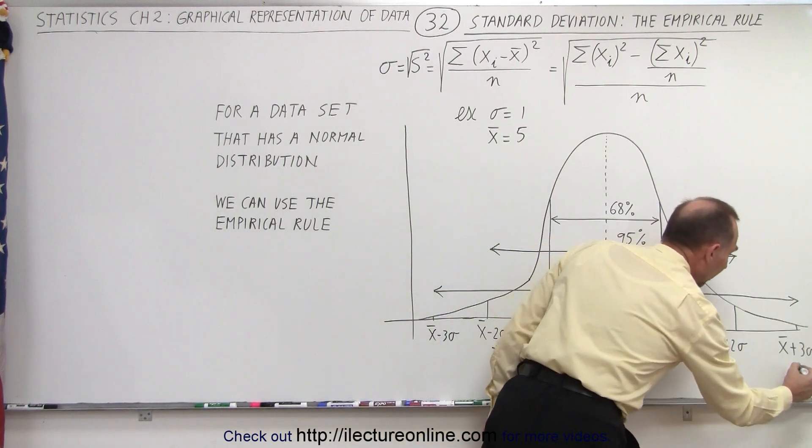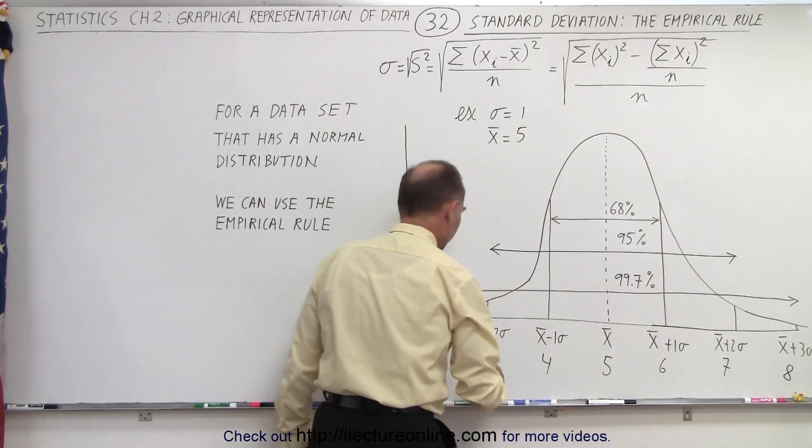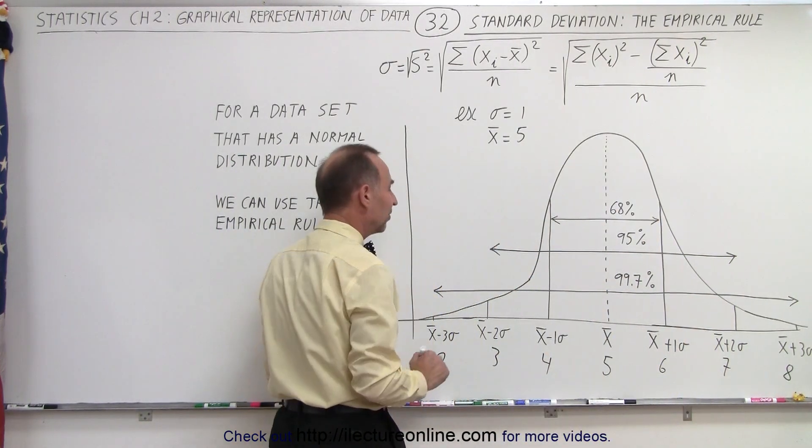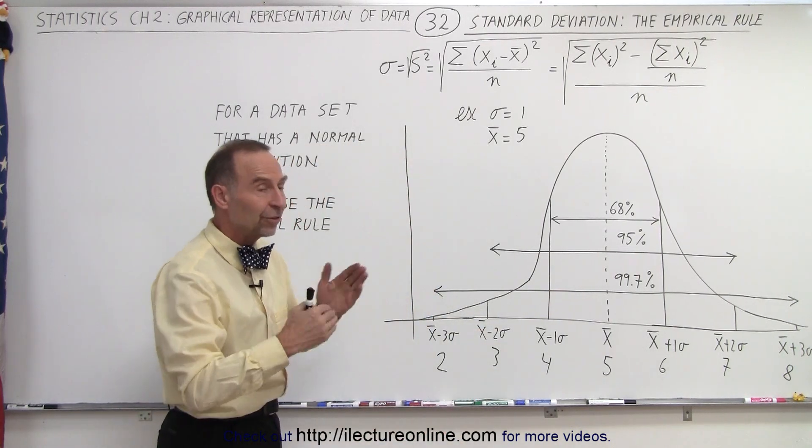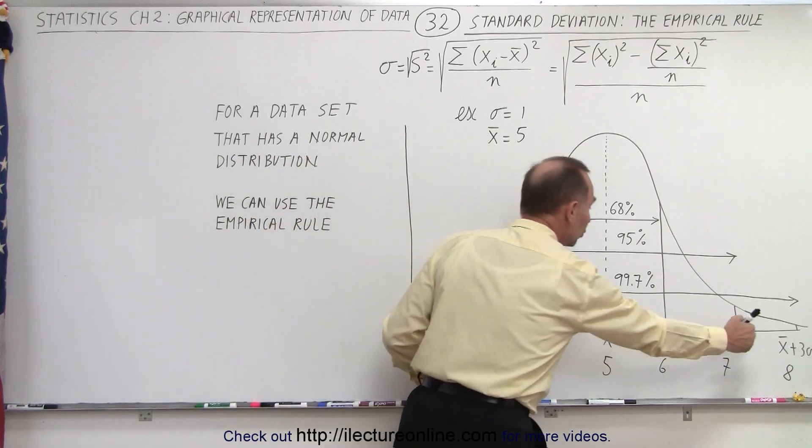And then if we go out one additional sigma, the mean plus three sigma and the mean minus three sigma, then you could say that almost 100%, 99.7% of your data will fall within two and eight.